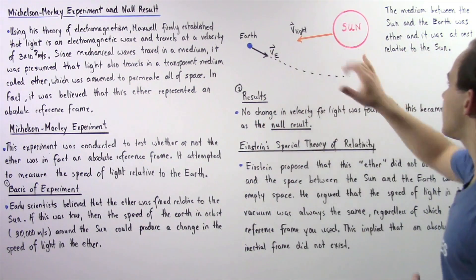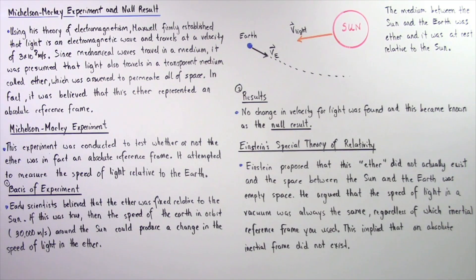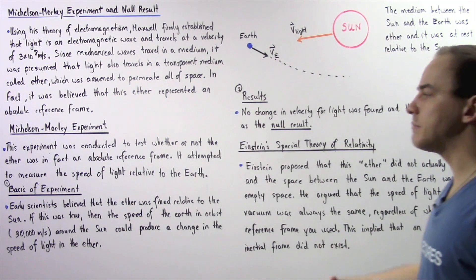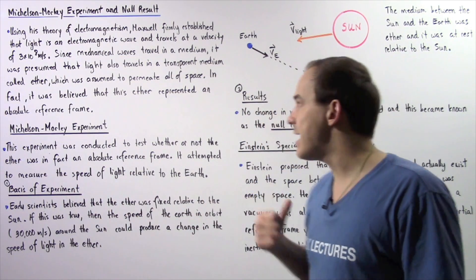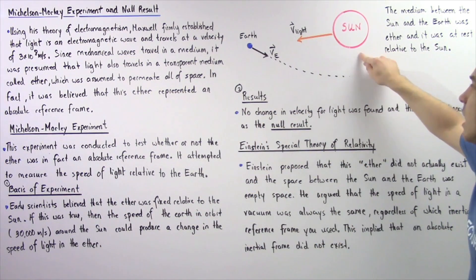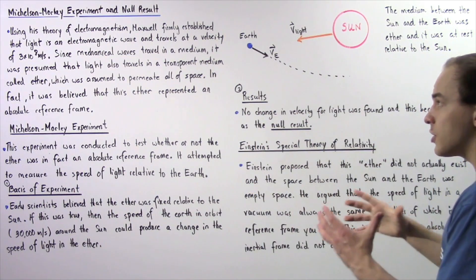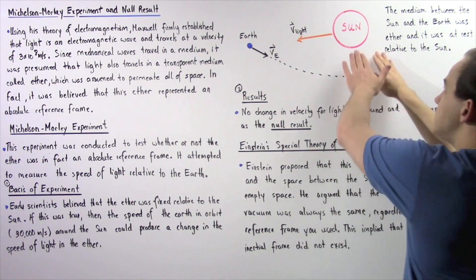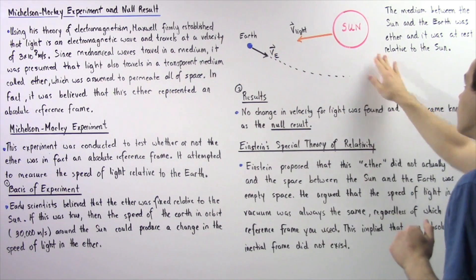So let's look at the following diagram for just a moment, which basically describes what the experiment attempted to measure. So we have the sun and we have the ether, the medium that is found in between the sun and the earth.